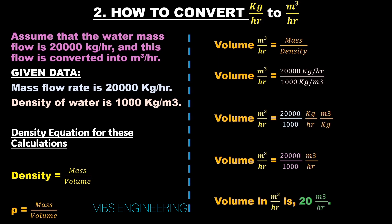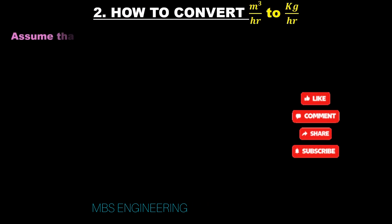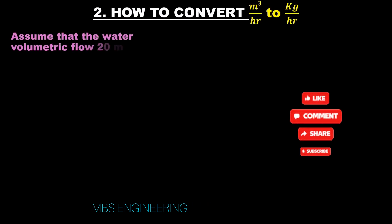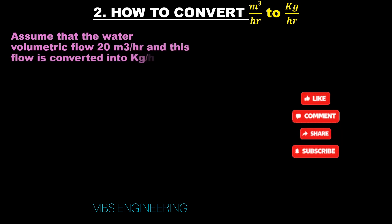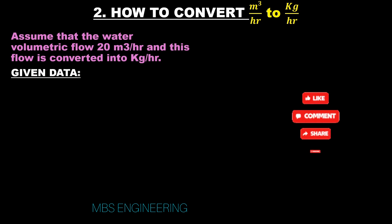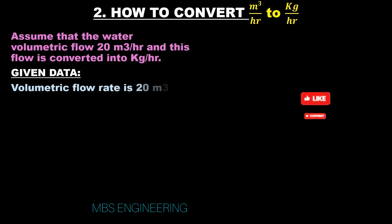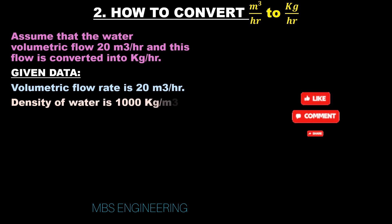Next, we will understand and learn how to convert meter cube per hour to kilogram per hour. Assume that the water volumetric flow is 20 meter cube per hour and this flow is converted into kilogram per hour. Given data: volumetric flow rate is 20 meter cube per hour, and density of water is 1,000 kilogram per meter cube.